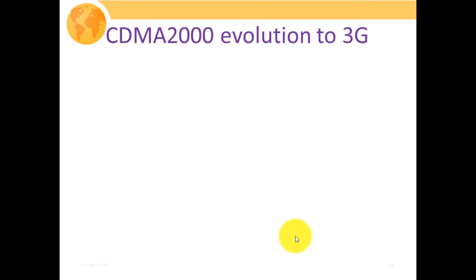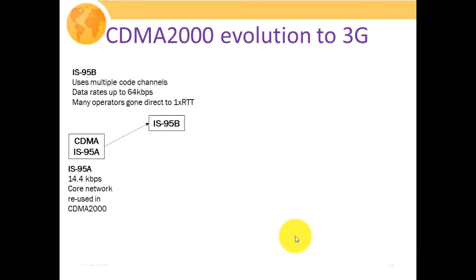Now, CDMA 2000 evolution to 3G. In 2G systems we have two variants: GSM, which is the European standard, and CDMA. Initially we have CDMA or IS-95, providing 14.4 kilobits per second. IS-95A evolved to IS-95B, using multiple code channels to provide data rates up to 64 kilobits per second. Many operators went directly to 1X RTT.